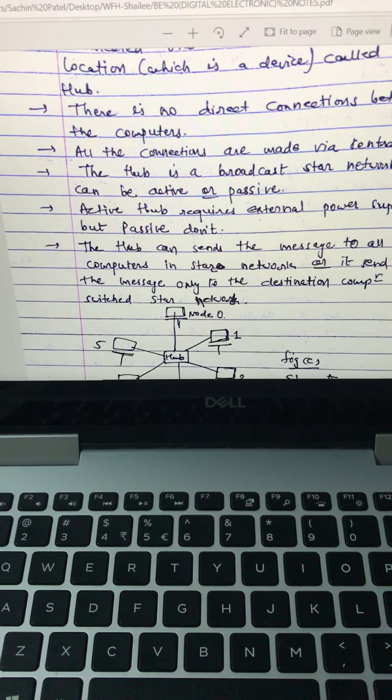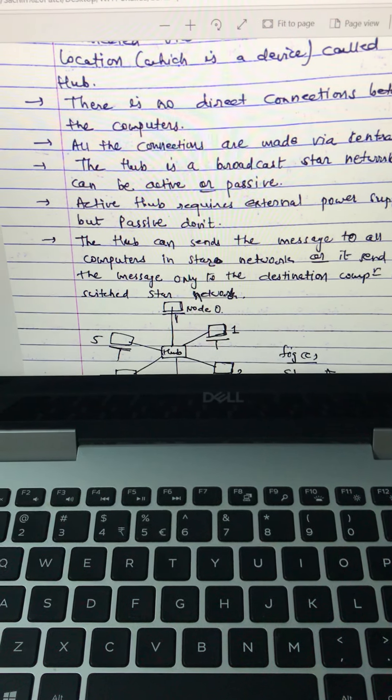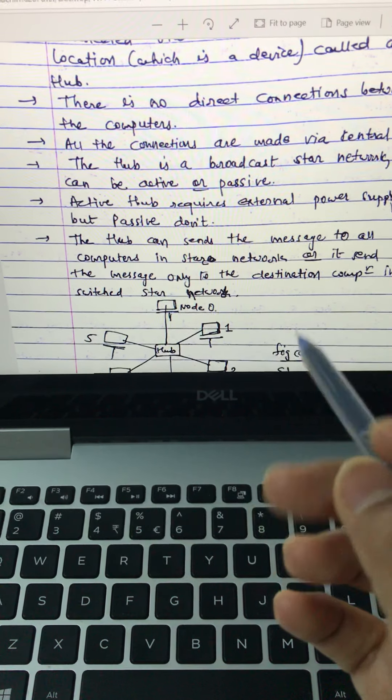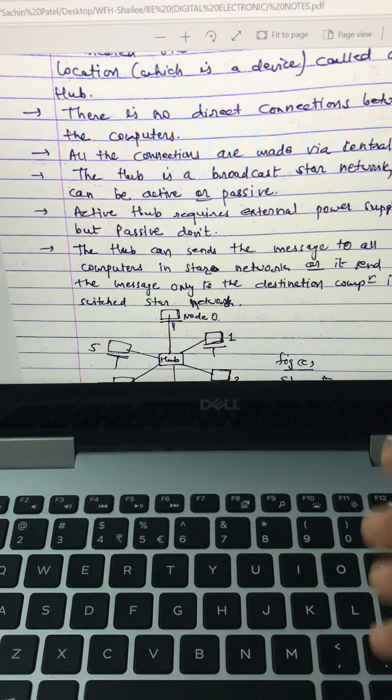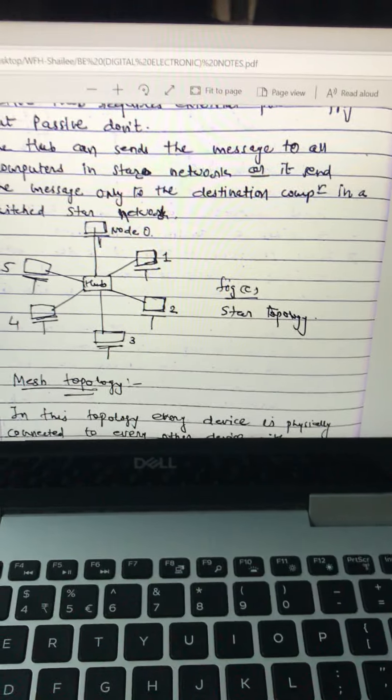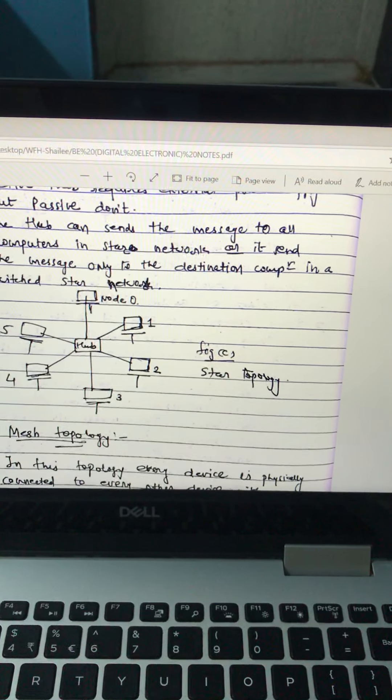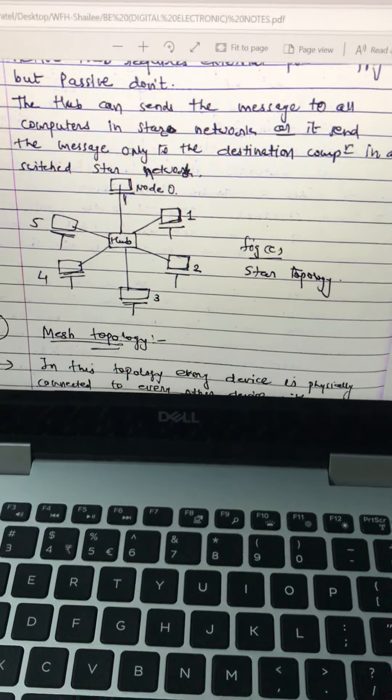Thus hub is a broadcast. Star network can be active or passive. If hub is not connected then it should be passive. Active hub requires external power supply but passive don't. The hub can send the message to all the computers in a star network or it sends the message only to the destination computer in a switch star network.